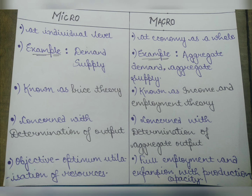Micro economics is mainly concerned with the determination of output at the individual level, while macro economics is concerned with the determination of aggregate output for the whole economy. The main objective of micro is the optimum utilization of resources — for example, using all available resources properly to produce a cake.